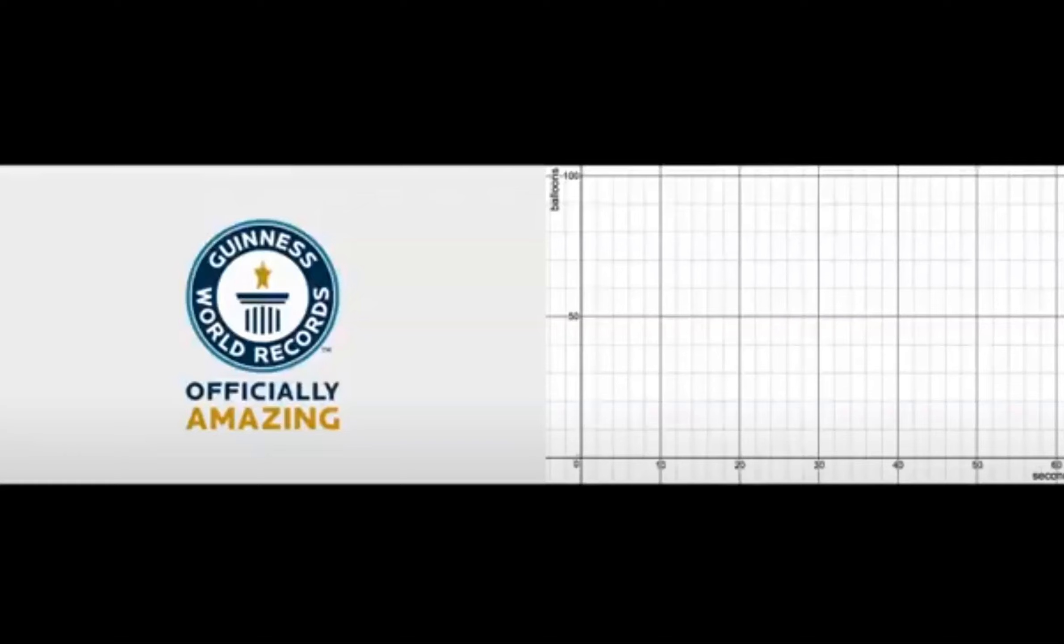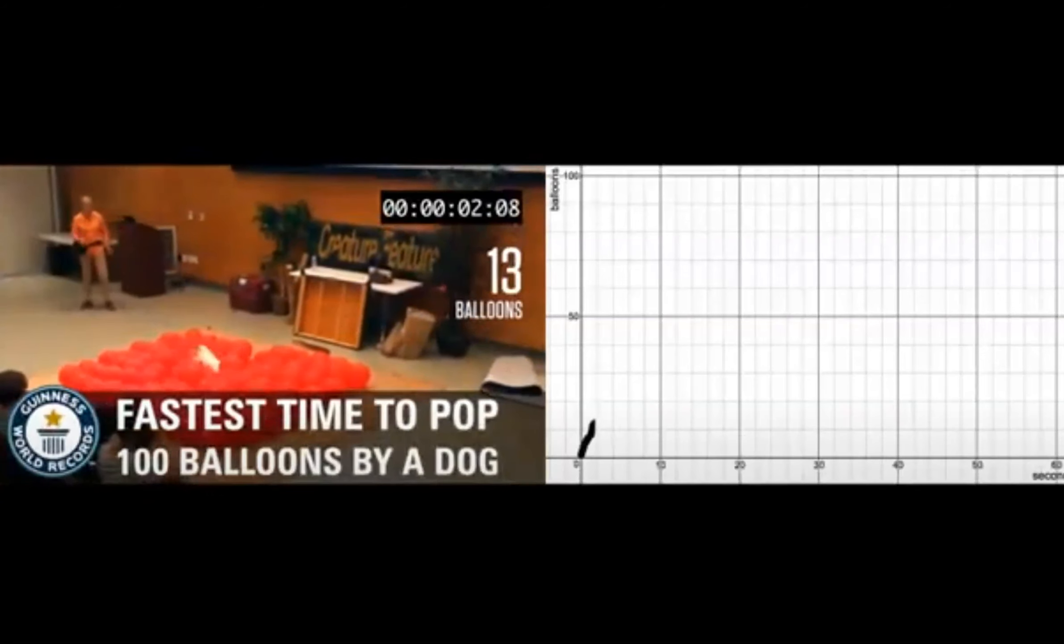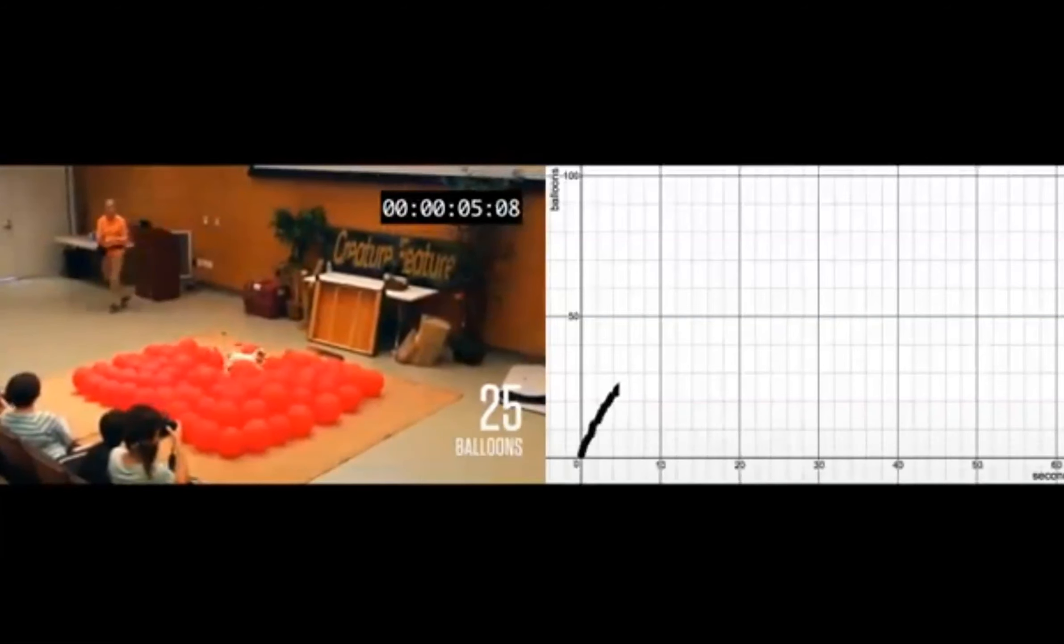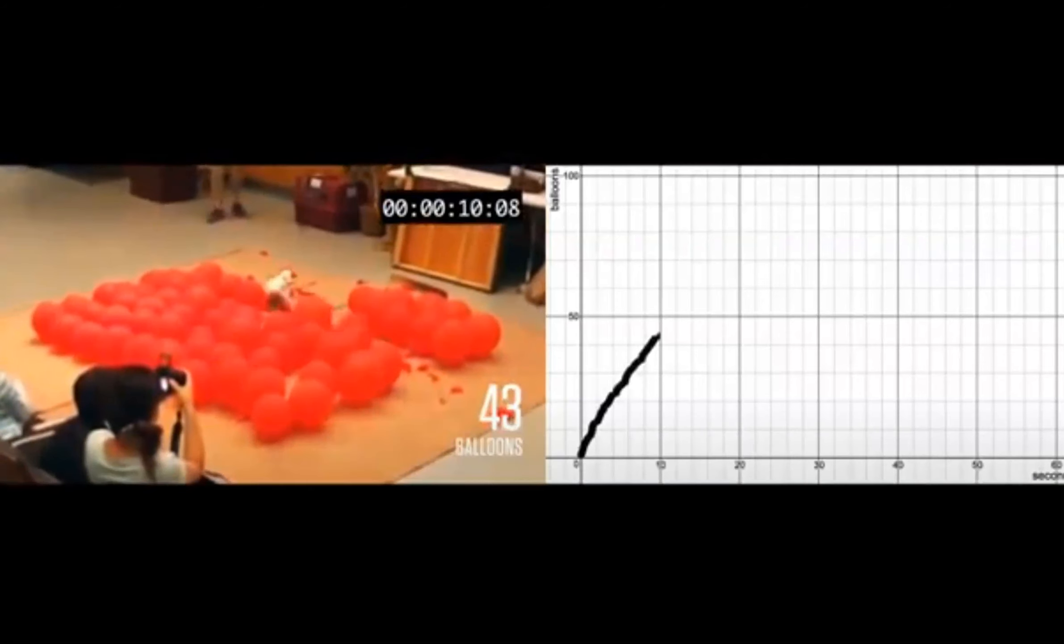You're going to see two screens side by side. On the left-hand side, you're going to see Twinkie popping balloons. On the right-hand side, you're going to see a concurrent graph that's going to help you know what's going on. So, here's an answer to part of the answer to the question. In 10 seconds, Twinkie's popped 43 balloons. And you could see, which is just about on pace. If it were 10 seconds, it should be 50. But you can see she's not really following a pattern. She's just popping balloons.